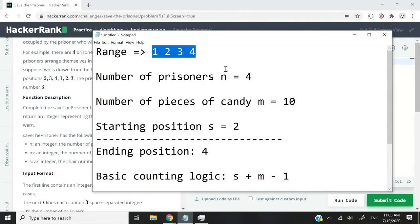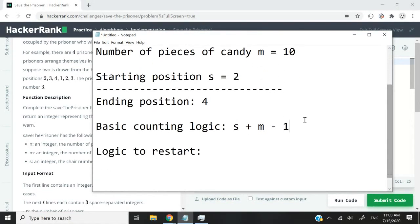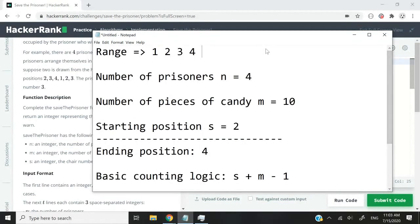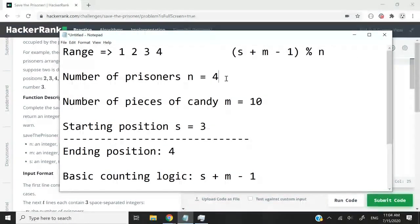So to find the ending position whenever we need to restart, we can use the modulus operator. To give you an idea, let me plug that into my logic. Let me grab this and make a live example at the top here in my notepad. Let's say we have four prisoners, 10 pieces of candy, and we want to start at position number two.